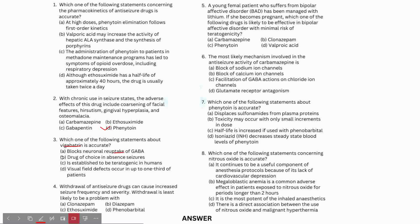Visual field defects occur in up to one-third of patients. This is an important side effect of Vigabatrin. Vigabatrin is an analog that irreversibly inhibits GABA transaminase, but the key point about re-uptake is incorrect. The correct answer is that visual field defects occur in one-third of patients, so this option is correct.